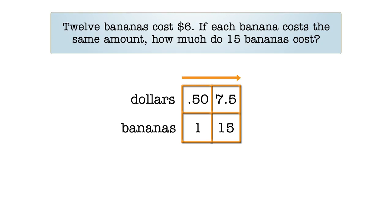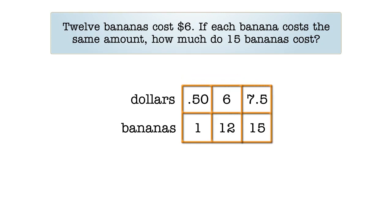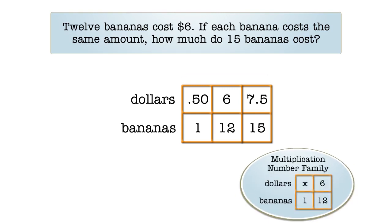Let's see the whole grid at once and review what we did. First, we used the information in the middle column and worked from right to left to find the unit cost. Then we used the unit cost and worked to the right to find the price of 15 bananas. In the past, we've referred to a table like this as a multiplication number family. When we use an expanded table like this, we'll refer to it as a proportion number family, or proportion family. In both cases, all we're doing is reducing the size of the multiplication table to make it easier to work with.